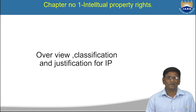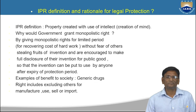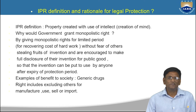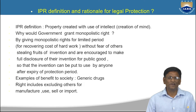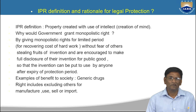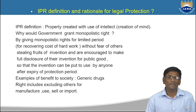Chapter one covers overview, classification, and justification of IP. Intellectual property is a creation of mind — the output of intellect. Intellectual property gives a monopolistic right, meaning the inventor can only use, sell, trade, or import. Others are excluded from this right and are not allowed to use your invention. You can do business, sell, or assign and get all the benefits, but for a limited period of time.